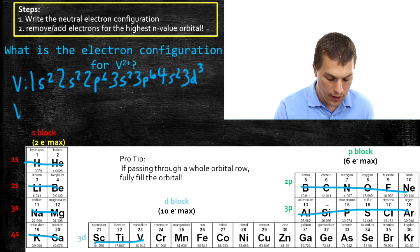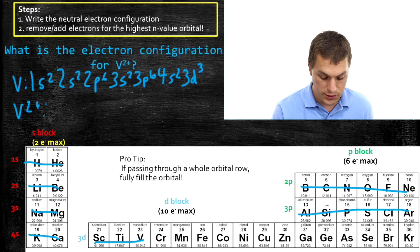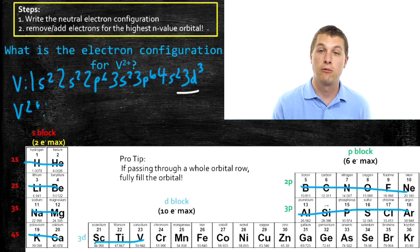Now, if you weren't really thinking about it, and we go to write Vanadium 2 plus, you'd say, okay, well, we need to remove two electrons. And we just look at the end of the string of numbers, and you say, okay, let's take them from the D. That would be wrong.